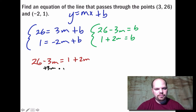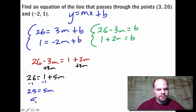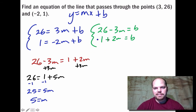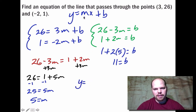Adding 3m to both sides: 26 = 1 + 5m. Subtracting 1: 25 = 5m. Dividing by 5: m = 5. The slope is 5. Using the second equation to find b: 1 + 2(5) = 11. So the y-intercept is 11. The equation of the line is y = 5x + 11.